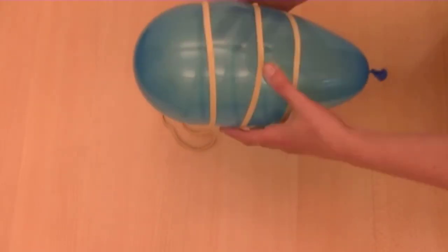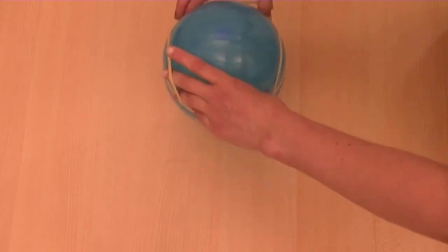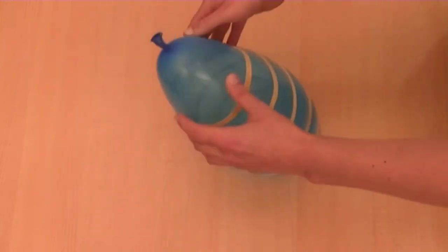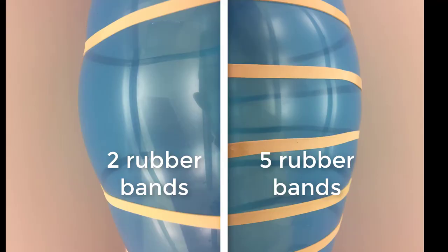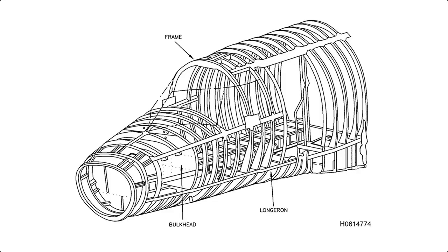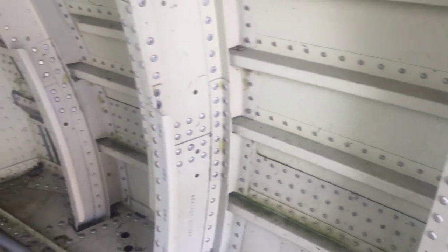And what we see with the balloon and rubber bands is that as more stiffening elements are added, which contain the pressurization forces, less pillowing occurs, and the distribution of forces becomes more equal. We can contain the pillowing effect while keeping a thin fuselage skin, thus minimizing weight.